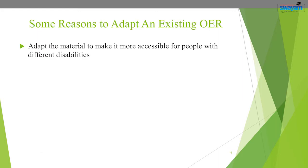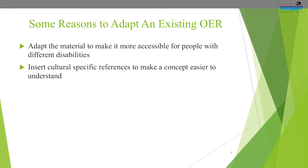There are reasons to adapt an existing OER. Queen's University Library suggests considering modifications needed to ensure content is appropriate for your course learning outcomes, assessment approaches, and teaching style. For example, you may wish to add, delete, reorder, or remix existing content. You may also adapt material to make it more accessible for people with different disabilities, insert culturally specific references, or translate it into another language.